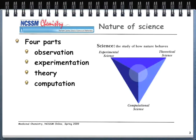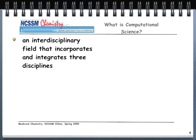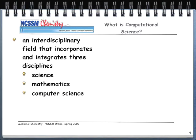Because of computational science, there is a need to teach courses like Introduction to Computational Chemistry. What is computational science? It's an interdisciplinary field — and that's important to remember — typically done in a team-based, collaborative environment. It integrates three disciplines: science, mathematics, and computer science.